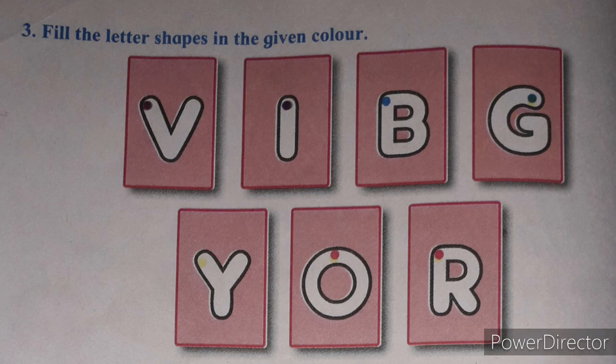V means violet, so fill the violet color there. I means indigo, fill indigo color there. B means blue, fill blue. G means green, fill green color in the letter shape. Y means yellow, O means orange, and R means red. These are the first letters of the color names — fill the proper colors in each letter shape.